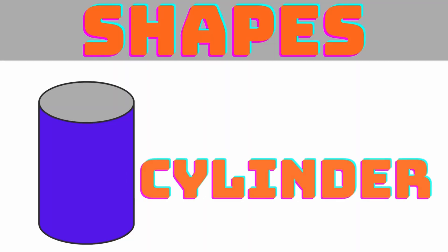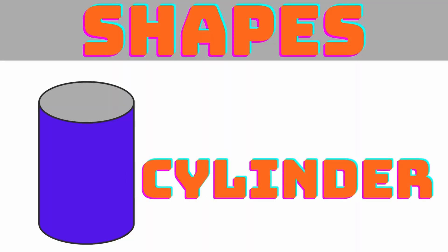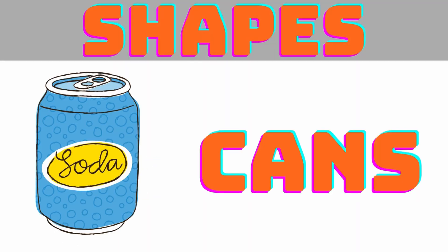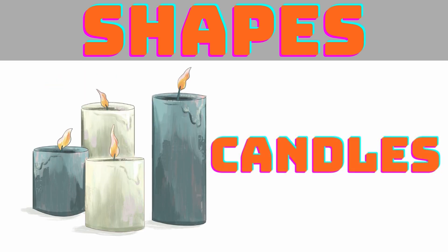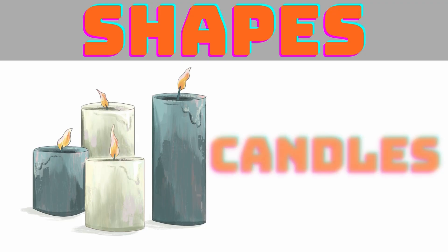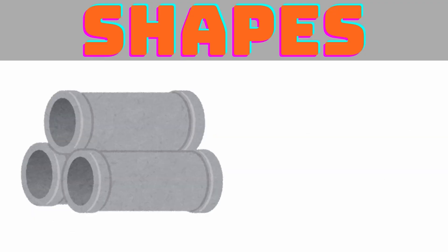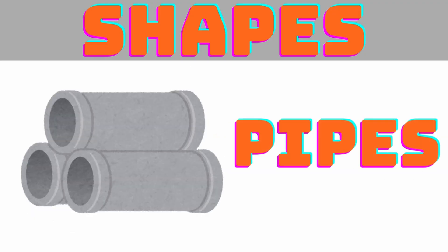Next one is cylinder. Examples: tin can, candles, pipes.